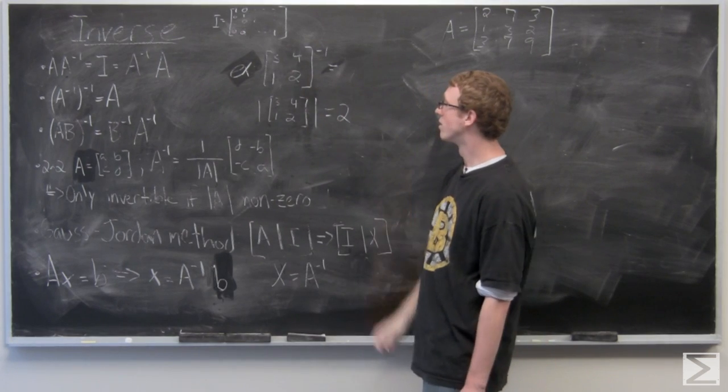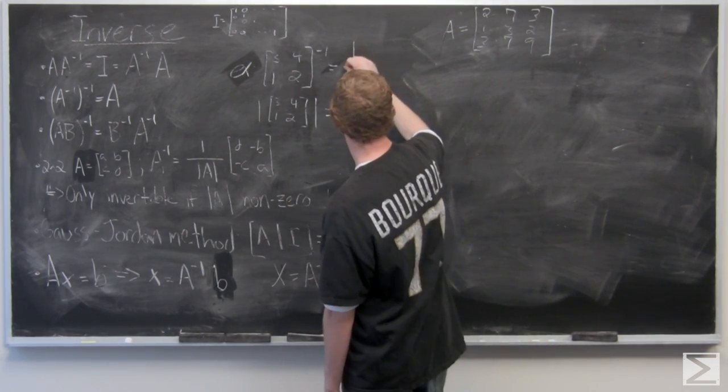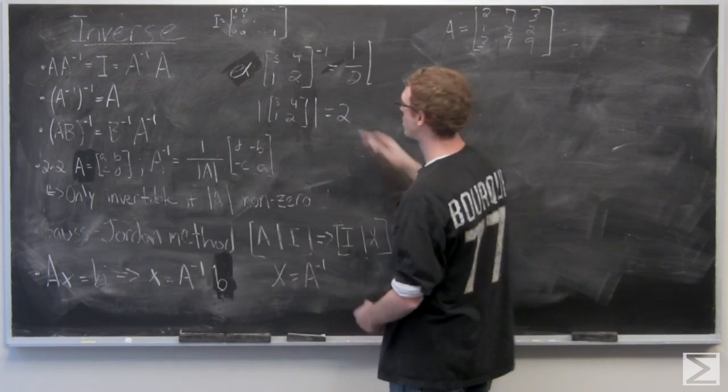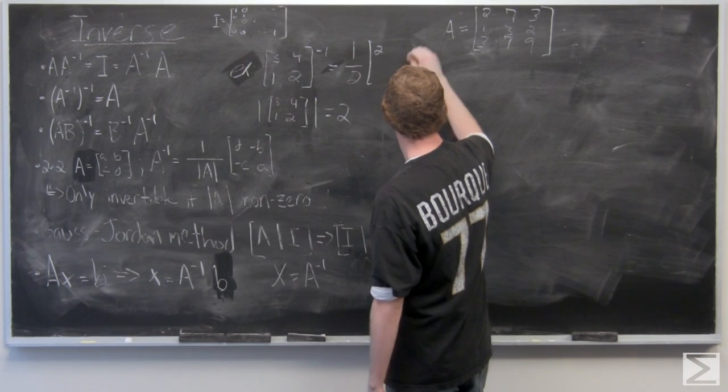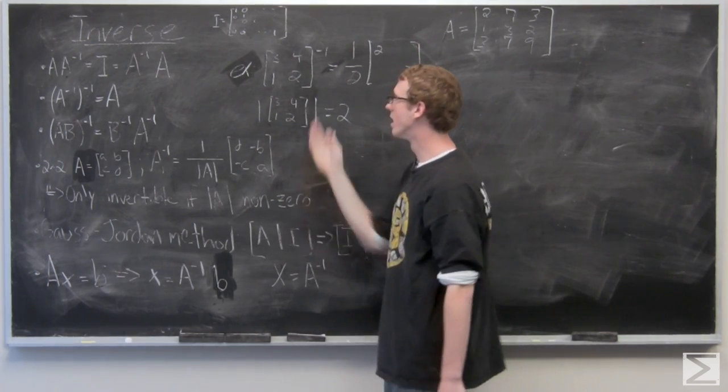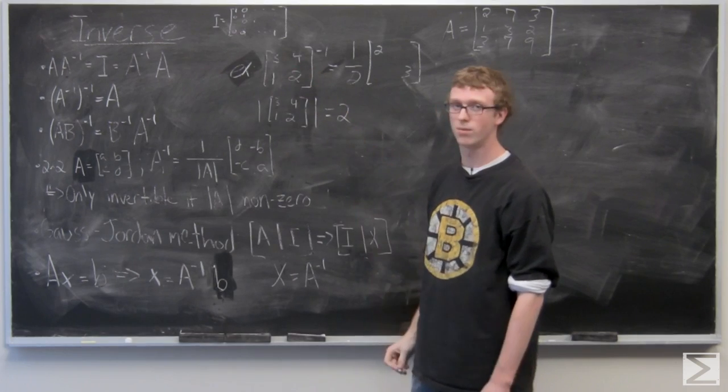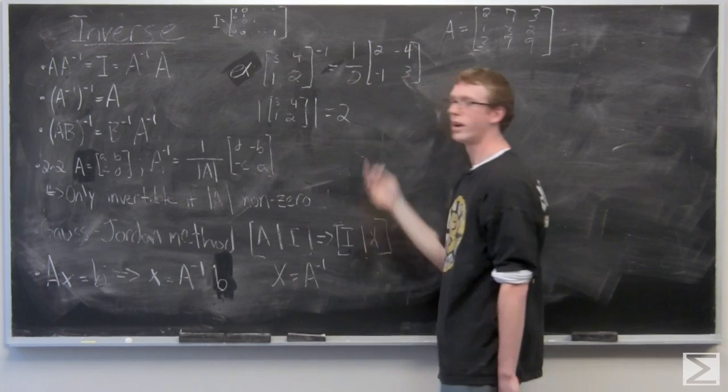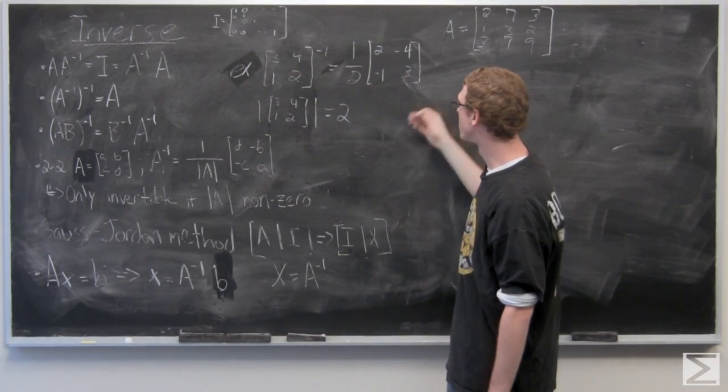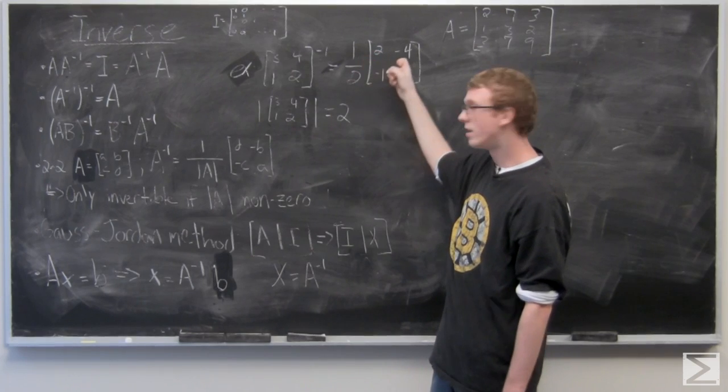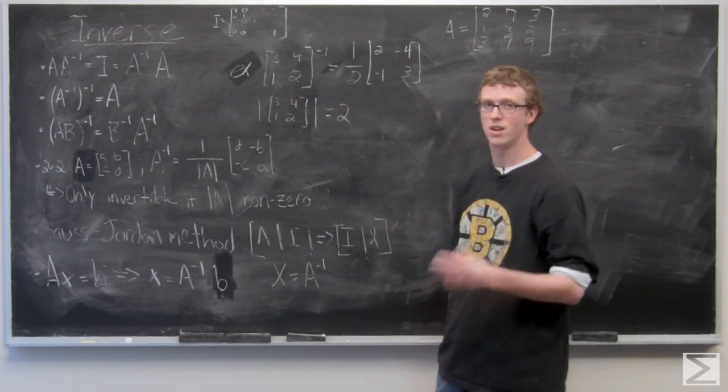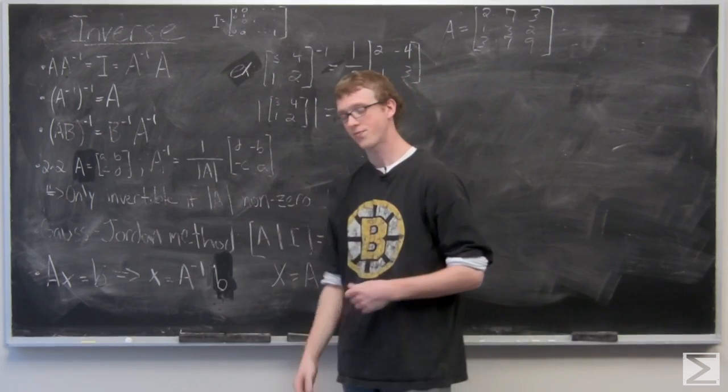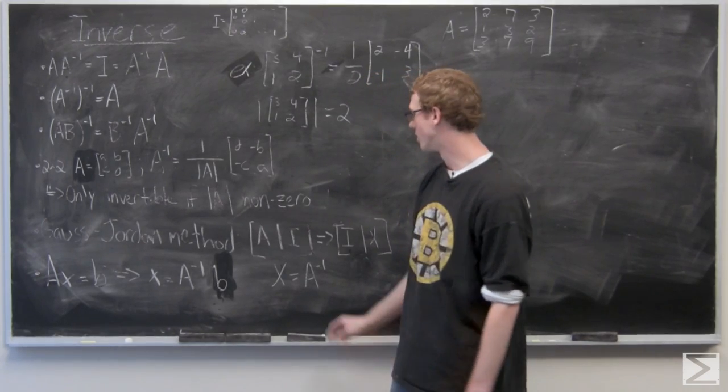So the inverse of that matrix is going to be half. So we need to switch D and A, so that's 2 and 3. And we also need to multiply 4 and 1 by negative 1. Now you can either evaluate that by multiplying through by the scalar and you get 1, negative 2, negative 1 half, and 3 halves. We're just going to leave that scalar out so we don't have to deal with the fractions in the inverse matrix. So that's the inverse of a 2 by 2 matrix.